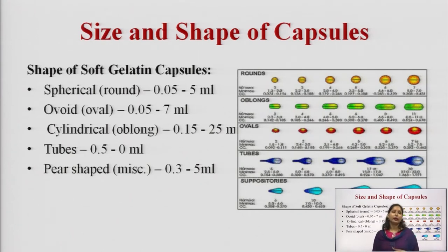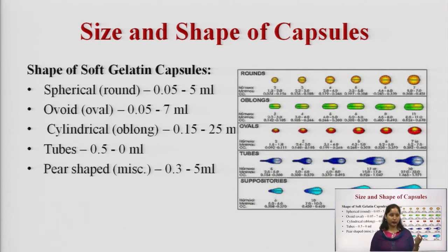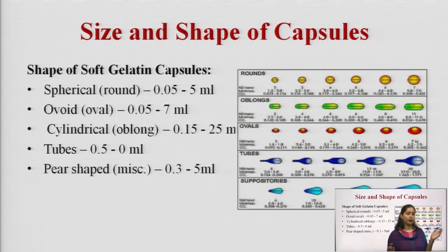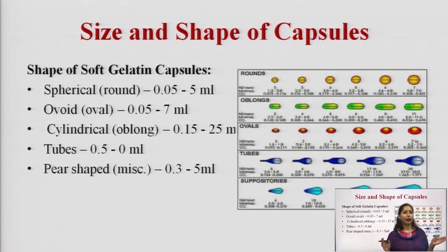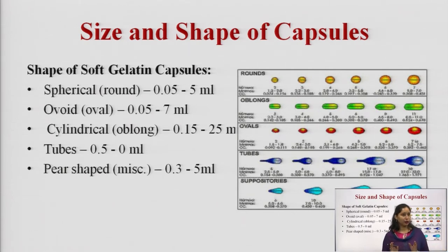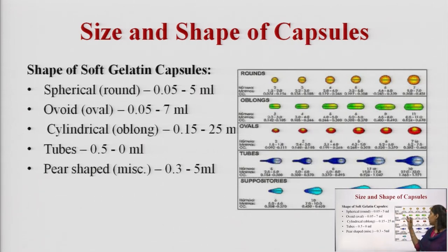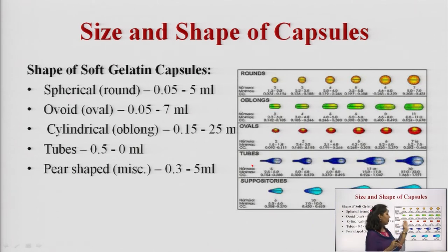Regarding the shape of soft gelatin capsules: unlike hard gelatin capsules which have only one cylindrical shape, in soft gelatin capsules we can mold the capsule into different shapes. For a spherical or round shape, the filling capacity is 0.05 to 5 ml. Oval shape is 0.05 to 7 ml. Cylindrical or oblong is 0.15 to 25 ml. Tube or miscellaneous shape is 0.3 to 5 ml. The shape determines how much quantity can be filled.